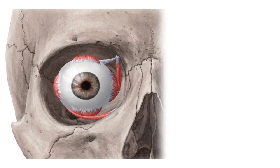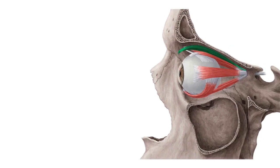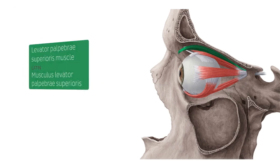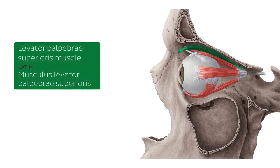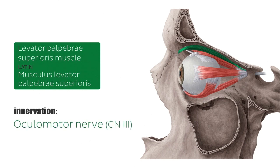The first structure we're going to be talking about is this muscle highlighted in green, known as the levator palpebrae superioris. We're looking at the muscle from a lateral left view. As the name suggests, this is the muscle responsible for lifting of the upper eyelid — contraction of this muscle elevates your eyelids. In terms of innervation, the muscle is innervated by the oculomotor nerve, or cranial nerve number three.